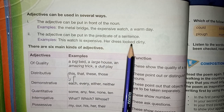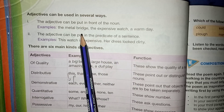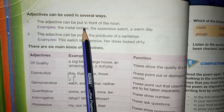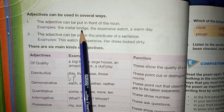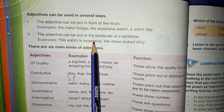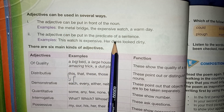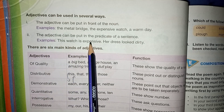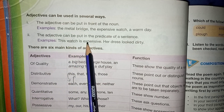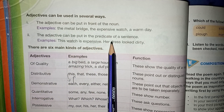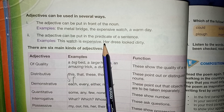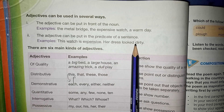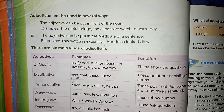Attributive adjectives وہ ہوتے ہیں جو noun سے پہلے آتے ہیں، اور predicative adjectives وہ ہوتے ہیں جو noun کے بعد استعمال ہوتے ہیں۔ For example: 'this watch is expensive' - watch noun ہے اور expensive adjective بعد میں آ رہا ہے، یہ predicative adjective کی example ہے۔ 'The dress looked dirty' - dress noun پہلے اور dirty adjective بعد میں۔